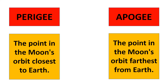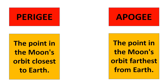Perigee and Apogee: The point in the Moon's orbit closest to Earth is called Perigee. The point in the Moon's orbit farthest from Earth is known as Apogee.